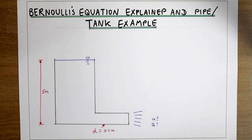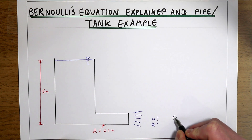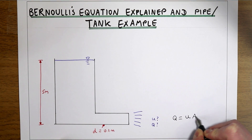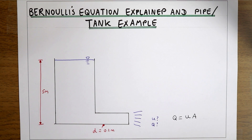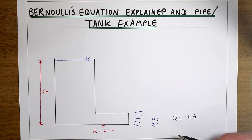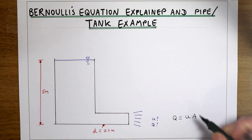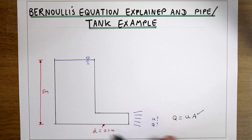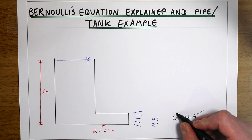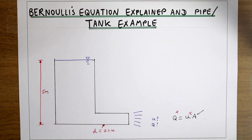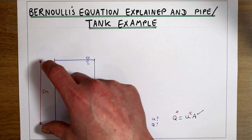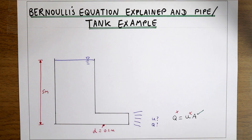In previous videos looking at continuity, we said that discharge equals velocity times area. In those examples this was easy because we were given two of the three terms, leaving only one unknown. In this example we've been given the area of the pipe from the diameter, but we don't have the discharge or the velocity, so we have to physically work out how this five meters of water gives us a certain velocity, which then gives us a certain flow.